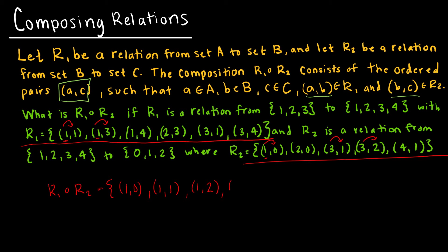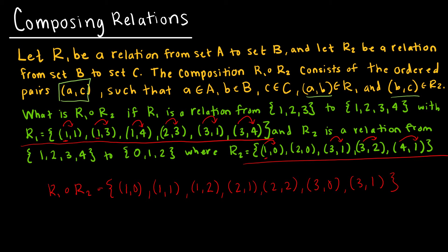Looking at my next ordered pair, (1,4): 1 tells me to map to 4, and 4 tells me to map back to 1. I already have the point (1,1), so I won't write it again. Then (2,3): 2 tells me to go to 3, and 3 tells me to go to 1 and also to 2. Then (3,1): 3 tells me to go to 1, and 1 again tells me to go to 0. Then 3 tells me to go to 4, and 4 tells me to go to 1. And that is the composition of my functions.